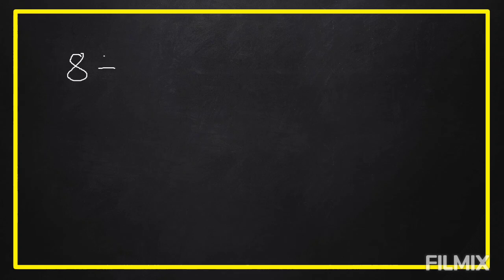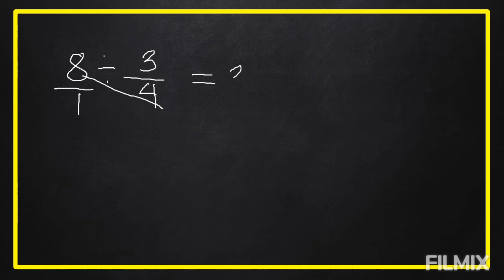Let's try another example: eight divided by three-fourths. We put a denominator of one under the whole number eight. This time, we use cross multiplication. Eight times four equals thirty-two. One times three equals three. We need to reduce thirty-two over three to lowest terms since it is an improper fraction.